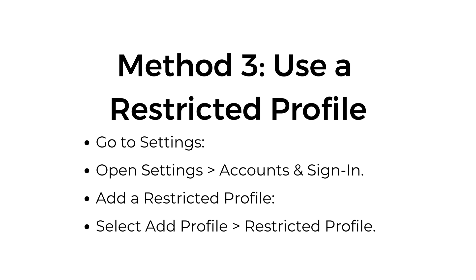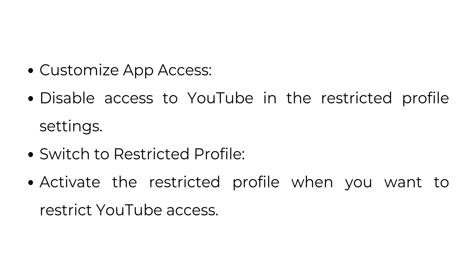Method 3: Use a restricted profile. Go to settings — open settings, accounts, and sign in. Add a restricted profile by selecting add profile, then restricted profile. Customize app access by disabling access to YouTube in the restricted profile settings. Finally, switch to the restricted profile and activate it when you want to restrict YouTube access.